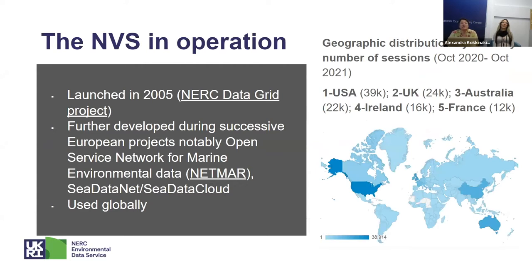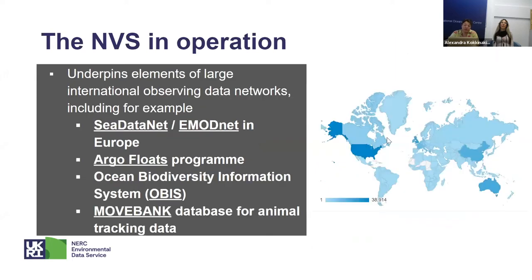So the NVS in operation — how does it look? It was launched in 2005 as part of the NERV data grid project, which was a first attempt to improve data discovery and access across distributed data sources, mainly for oceanographic and atmospheric data. The NVS was further developed thanks to European funding through the Open Service Network for Marine Environmental Data, also known as NETMAR, as well as CDataNet and CDataCloud projects. It is used globally, as you can see on the map on the right, showing geographic distribution by monthly number of sessions over the last 12 months until October 2021, with the largest usage in the US, Australia, and Europe.